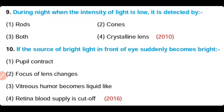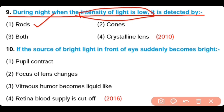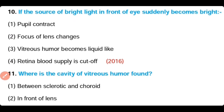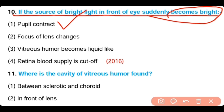Night blindness is caused due to deficiency of rhodopsin. Question number nine: During night, when intensity of light is low, it is detected by (a) rods, (b) cones, (c) both, (d) crystalline lens. The answer is option one — during night, when intensity of light is low, it is detected by rods. Question number ten: If the source of bright light in front of the eye suddenly becomes bright, (a) pupils contract, (b) focus of lens changes, (c) vitreous humor becomes liquid-like, (d) retina blood supply is cut. The correct answer is option one — the pupils contract to decrease the intensity of light.